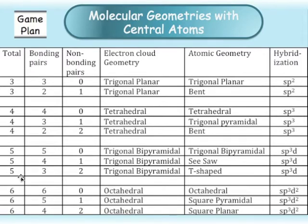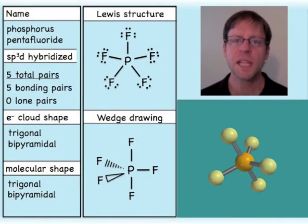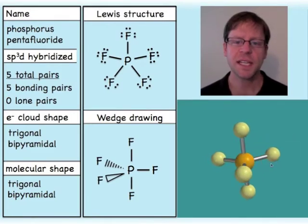We will be dealing with six geometries in this video that have either five or six different things hanging off of them — either lone pairs or other atoms. The first I'll talk about is the case of five different atoms hanging off of a central atom when there are no lone pairs. My example is going to be PF5, phosphorus pentafluoride.